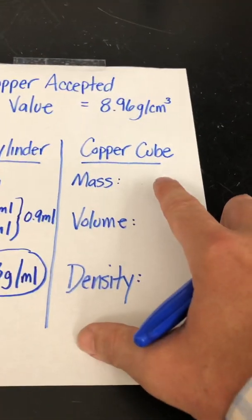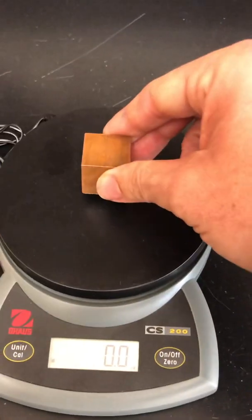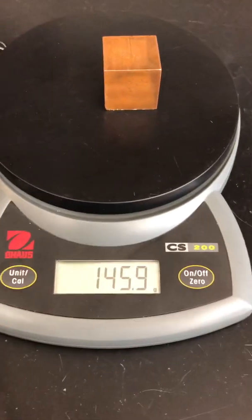Now I'm going to move over to the copper cube. Put the cube on the balance. I get a mass of 145.9 grams.